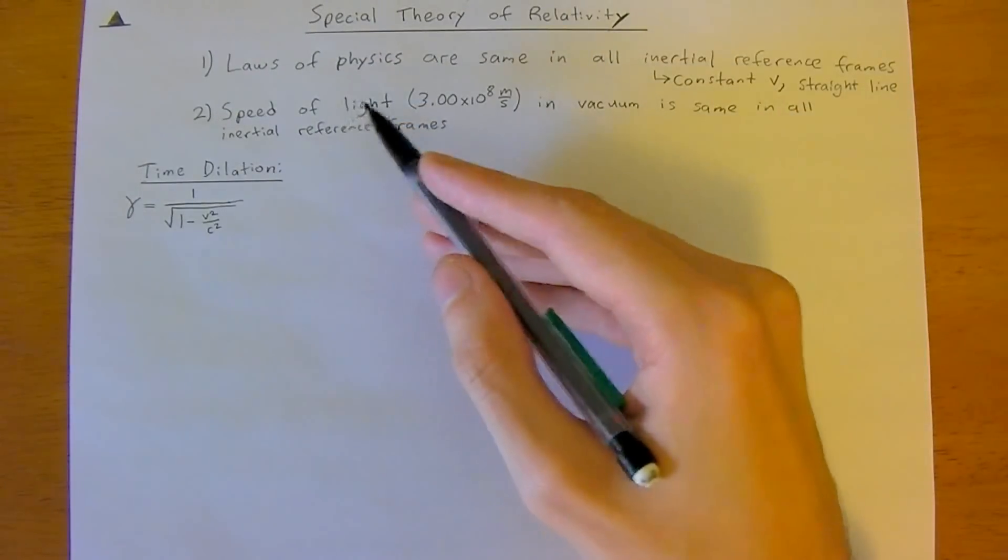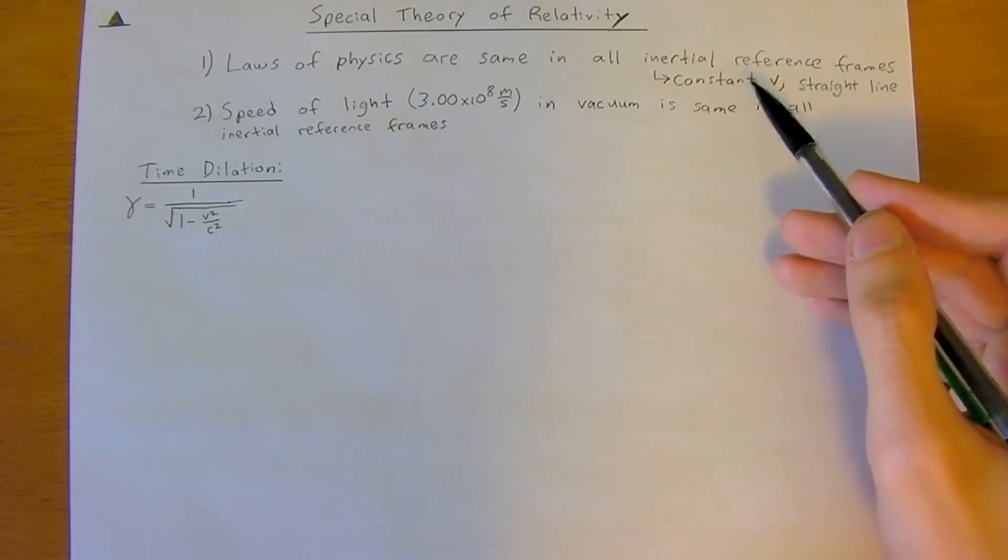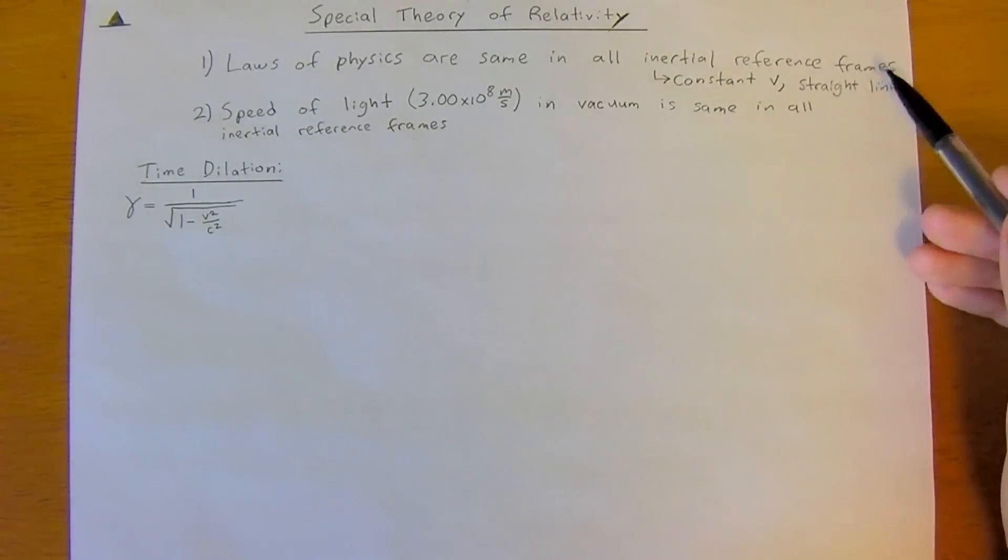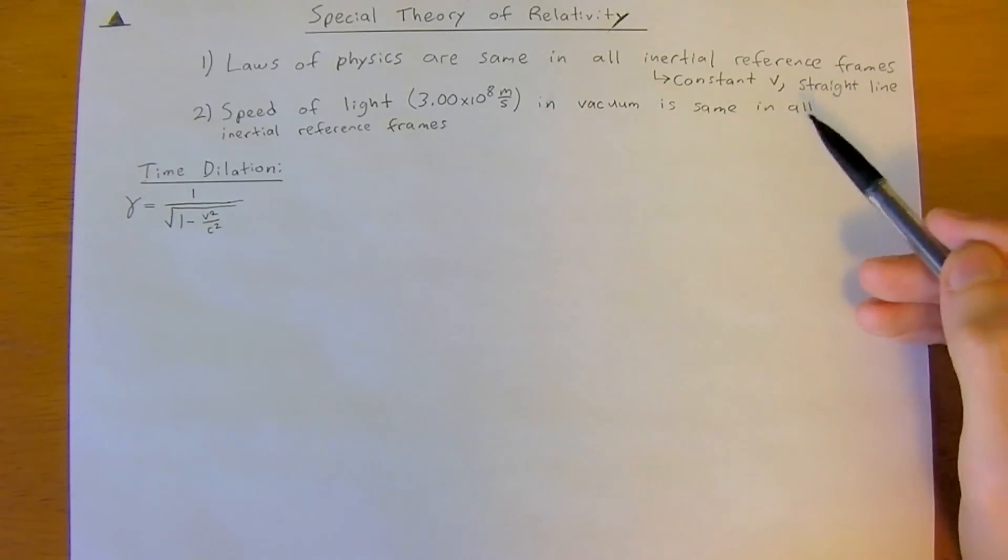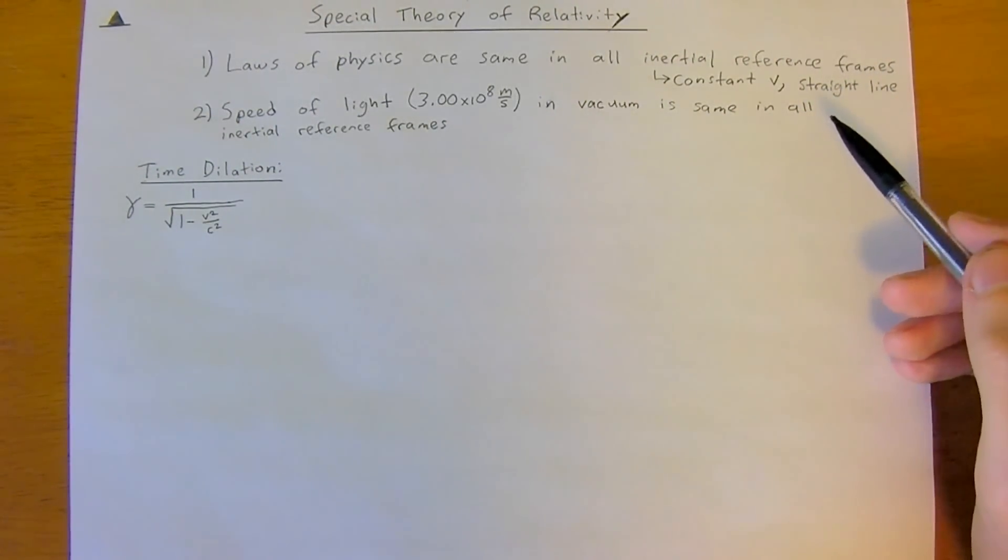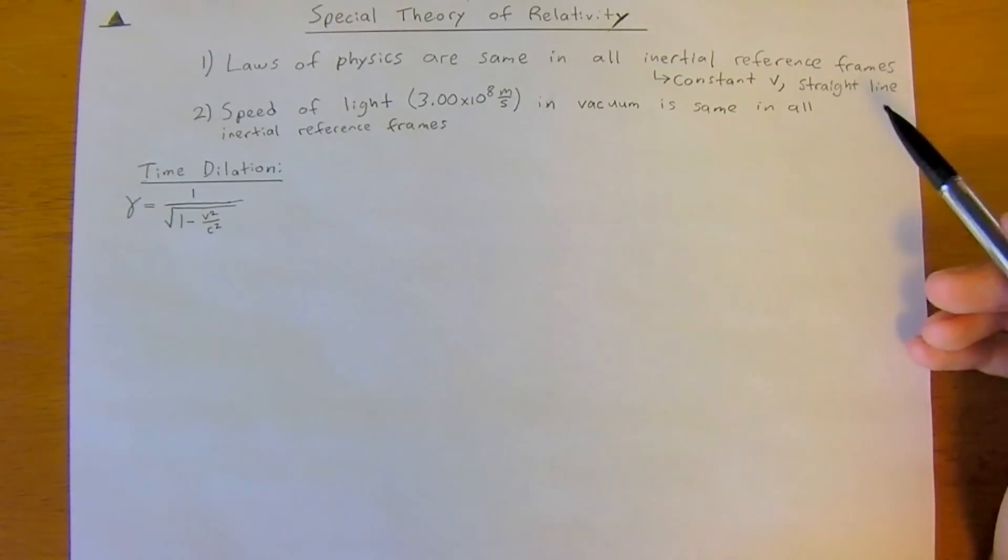So the first is that the laws of physics are the same in all inertial reference frames. An inertial reference frame just means a constant velocity and in a straight line. So a non-inertial reference frame would be something with acceleration and rotation.